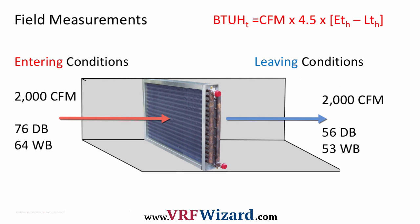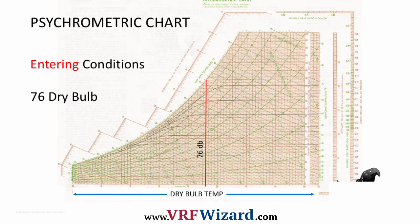I'm going to show you how to put that on a psychrometric chart, but you don't have to worry about that — the calculation will give you these numbers. For the entering conditions at 76 dry bulb: the dry bulb temperature runs along the bottom of the psychrometric chart. Here's 70, here's 80, so here's 76. The line runs straight up.